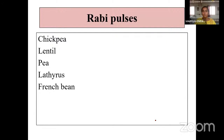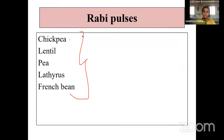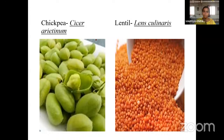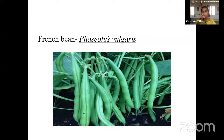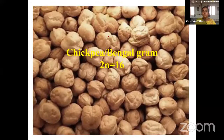That concludes the curry crops. Now coming to rabi pulses: chickpea, lentil, pea, lathyrus, and French bean are considered rabi pulse crops. Among these, today we will discuss only chickpea and lentil. Chickpea and lentil are well-known; masoor dal curry is very famous in northern India. French bean — if seeds are dried and stored, we call it French bean.